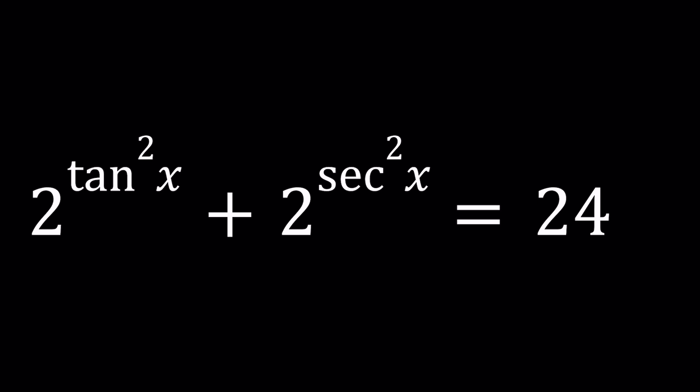How is that possible? You take trigonometric values like tangent and secant, you raise 2 to the power of those values and you get 24.